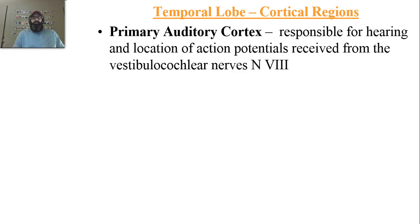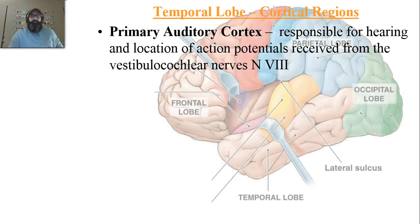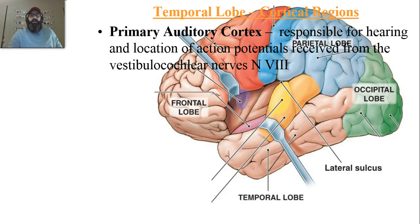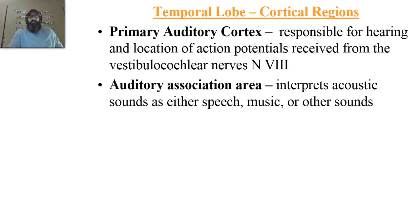The primary auditory cortex is primarily responsible for hearing. It's located where action potentials are received from the vestibulocochlear nerves — that pair of nerves called CNVIII. If you're looking at the temporal lobe, the primary auditory cortex is on the superficial end, shown here in yellow, located right on the lateral side of the brain.